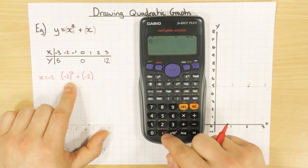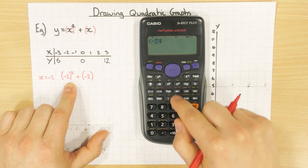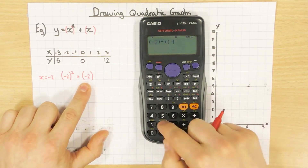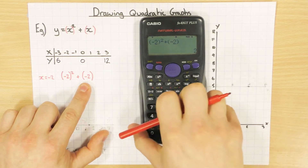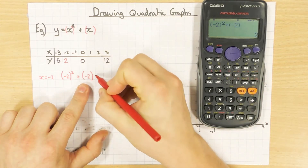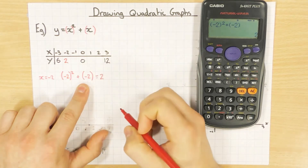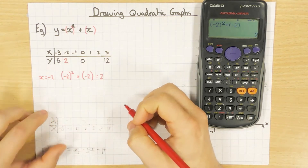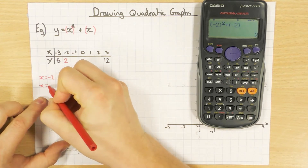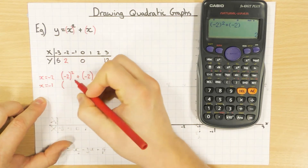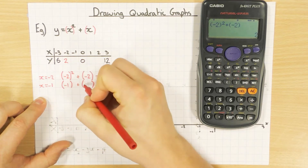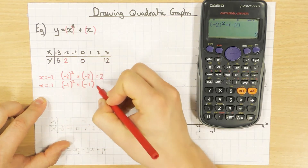So let me just put everything in. In brackets, minus 2 squared, then I want to add in brackets minus 2. I get the answer of 2, so I can fill that in there — 2 needs to go into the table. Next one is minus 1, so x equals minus 1. Inside the brackets I'm just going to put minus 1, minus 1. Don't forget that one is squared.